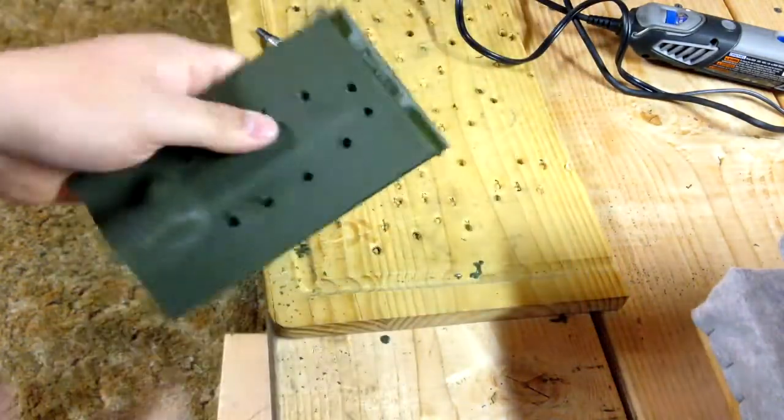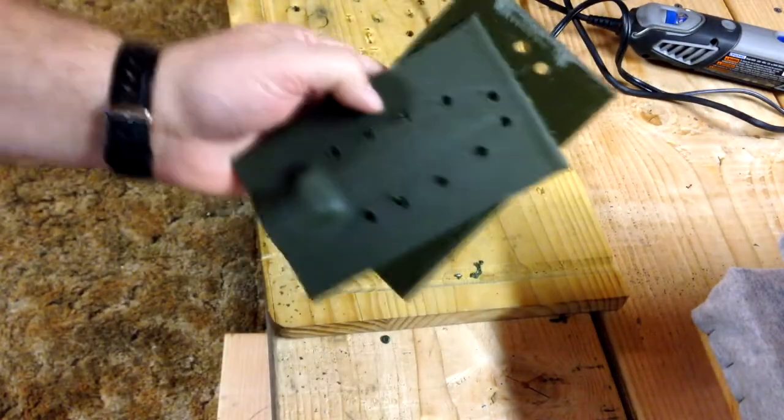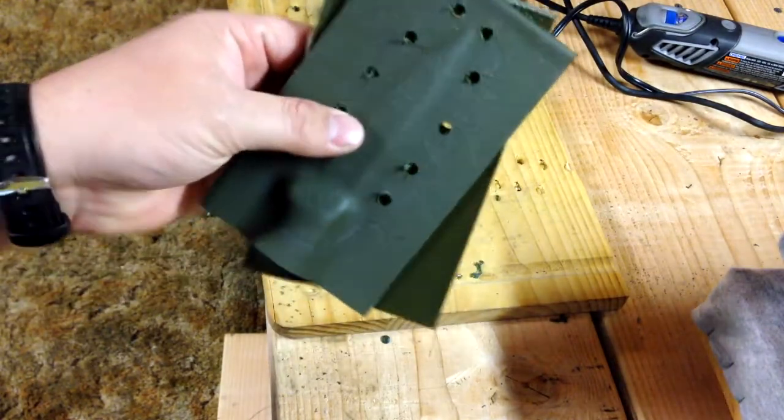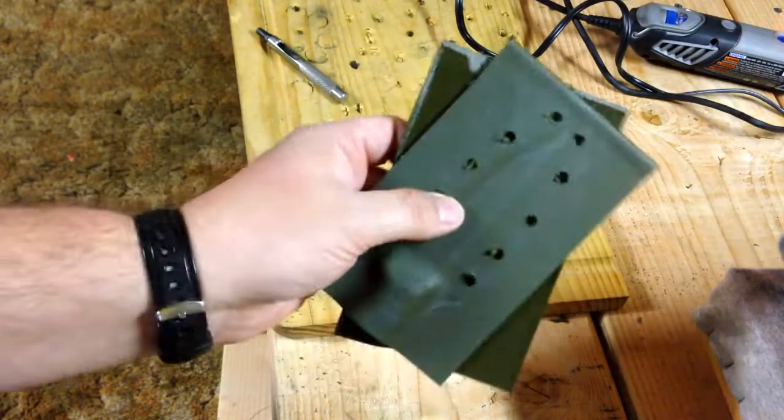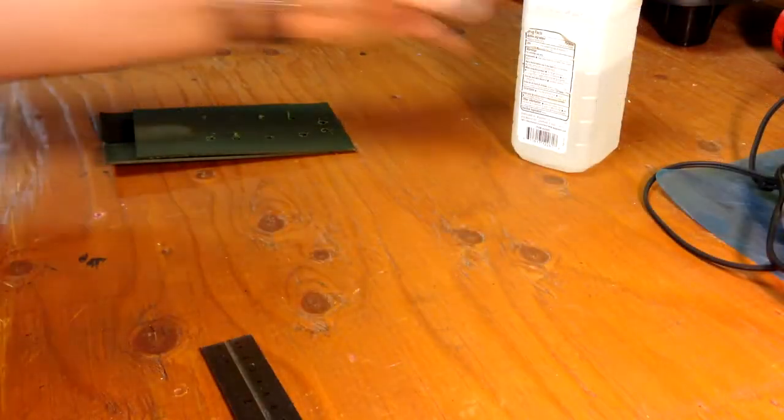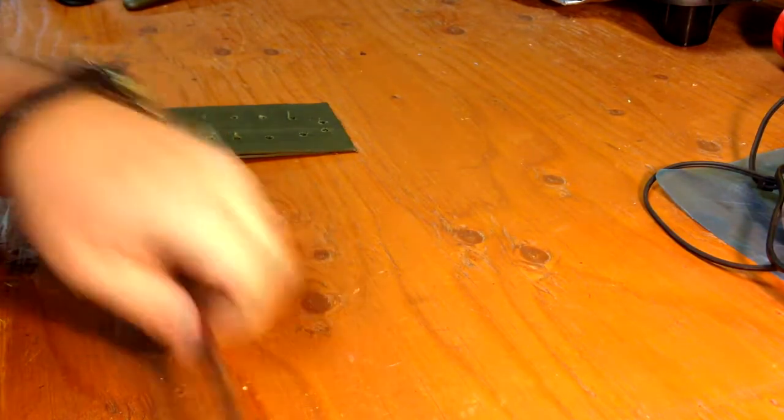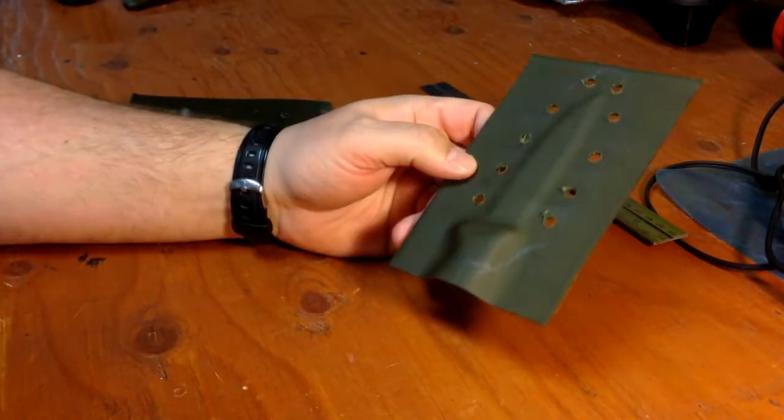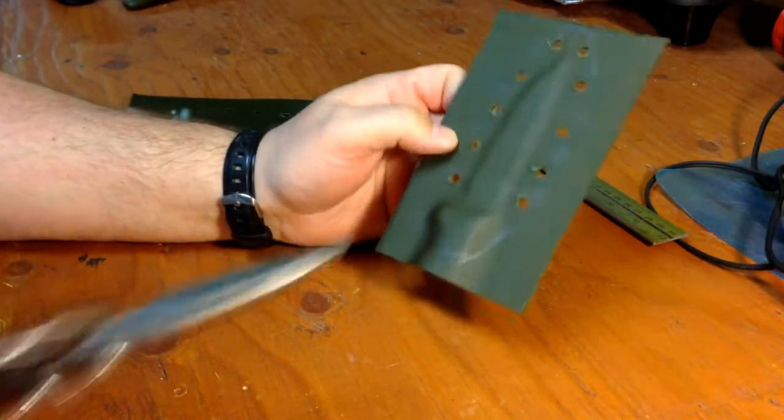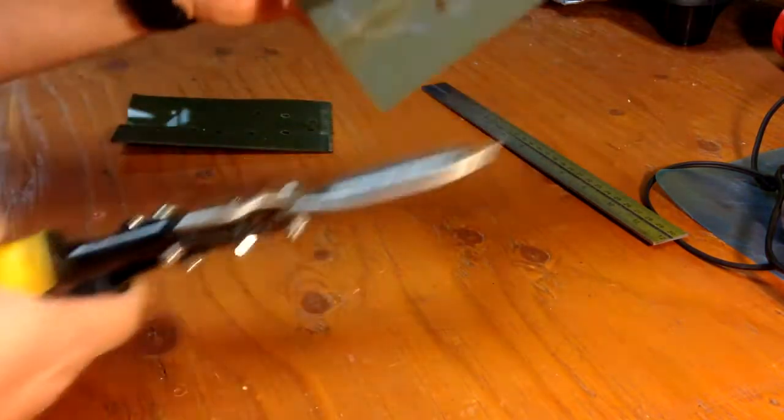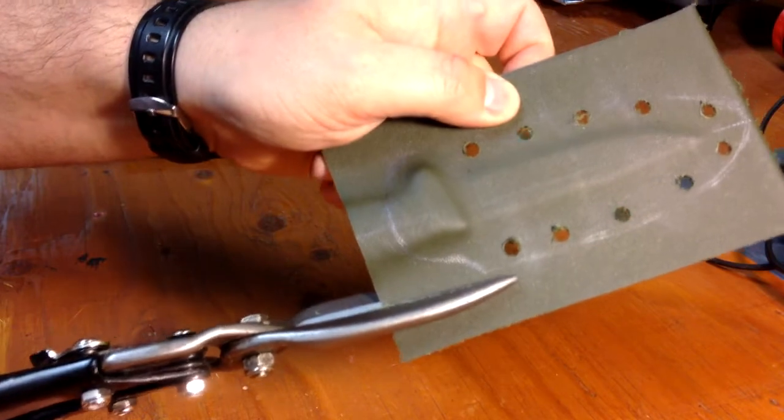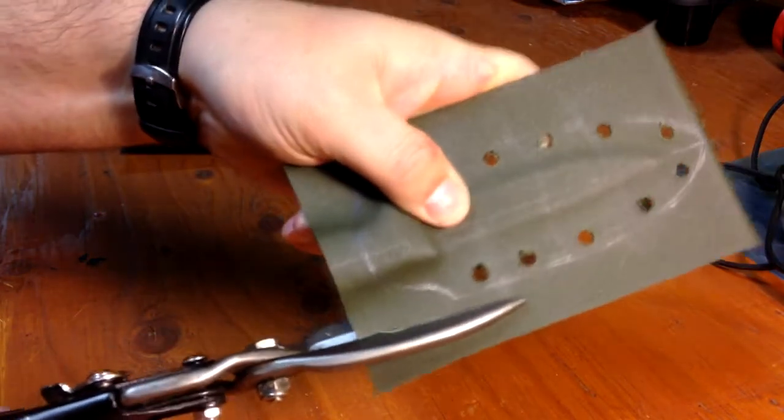Next part is to actually trim off the excess Kydex and trim the back to shape. We'll move back over to the table. We're going to take our back piece, which still has the outline, and cut about a quarter of an inch outside the line with our tin snips.